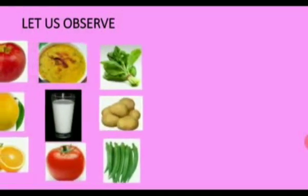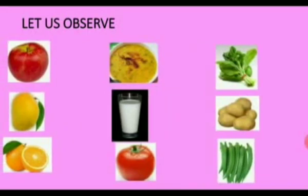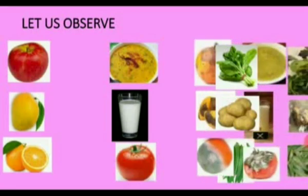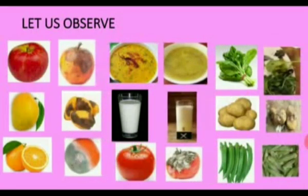Now let us observe here. You can see the picture of fresh fruits, vegetables, and food items. And now observe again — these are the pictures of spoiled food. Without eating, just by looking at them, you can see the change in color and change in the appearance of fruits, vegetables, and food items.